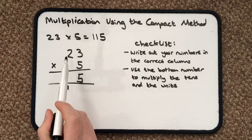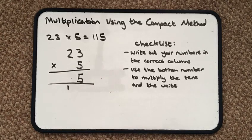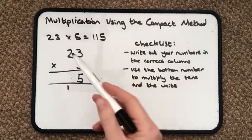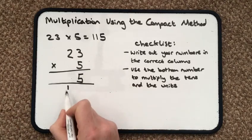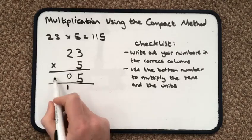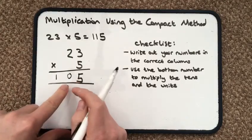Then I'm going to do 2 times 5. 2 tens times 5. I'm not actually going to do 20 times 5. I'm just going to do 2 times 5, which is 10, which I normally would write here 10, because I've got 0 tens and 100. But I actually have this one to add on as well.